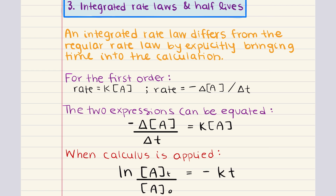For a first-order reaction, we can write that the rate is equal to K, which is the rate constant, multiplied by the concentration of reactant A. Similarly, the rate of change in concentration of A over time can also be written as another rate expression. Both of these expressions are definitions of rate, so we can equate them to give us the following relationship.